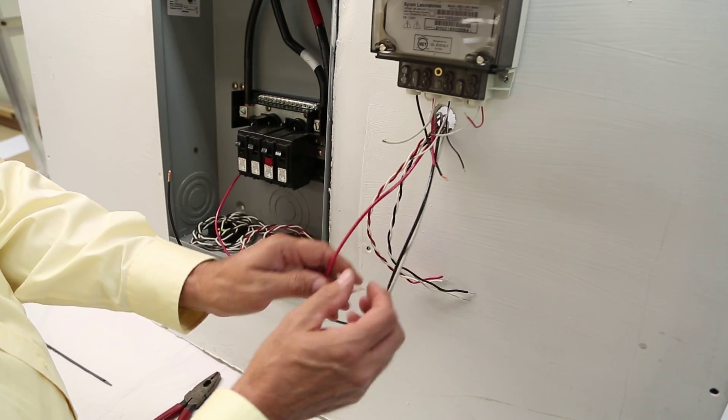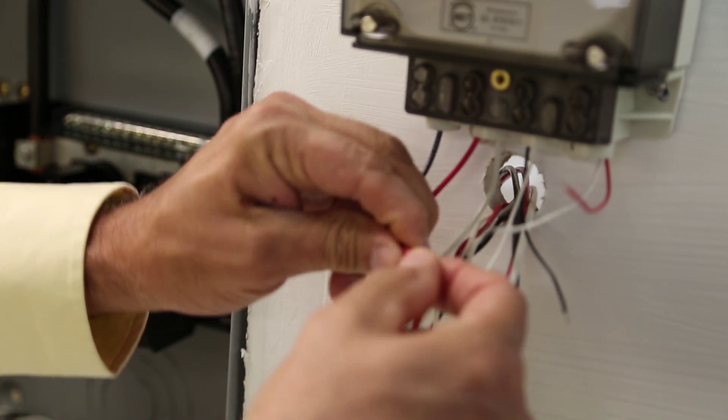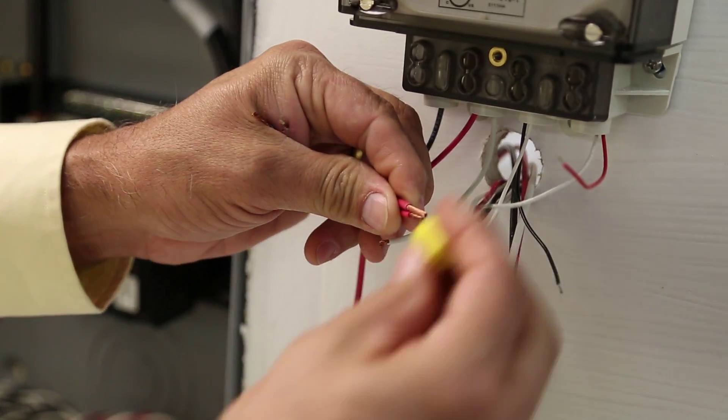Here we show the meter mounted on a wall. First thing we do is connect your voltage leads together. Keep the red leads with the red. Use a wire nut.